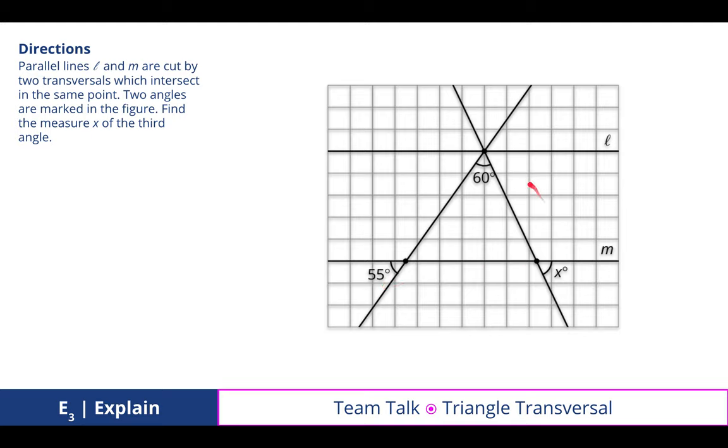And we went through this whole process using what we've learned. So if this is 55 degrees, then this is 55 degrees. Now that I know two of the three angles of a triangle, I can subtract that from 180. So 180 minus 60 is 120. 120 minus 55 is 65, right? And then the vertical angle of 65 would also be 65 for the measure of angle X.